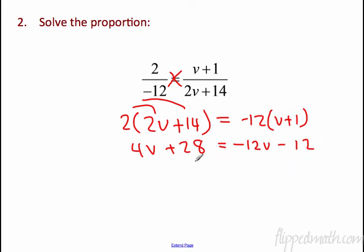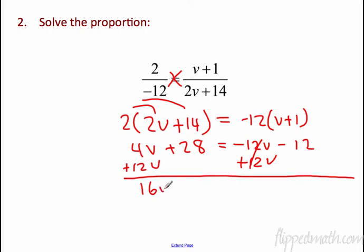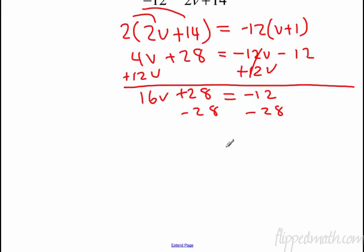I would add 12V. Remember, pick the smaller variable and get rid of that first. And the opposite of negative 12 is positive 12. So that'll make those cancel. I'm left with 16V plus 28 will be equal to negative 12. Let's get rid of the 28 now. The opposite of adding 28 is subtracting 28. So that'll do that. They cancel. 16V comes down equal to negative 40.